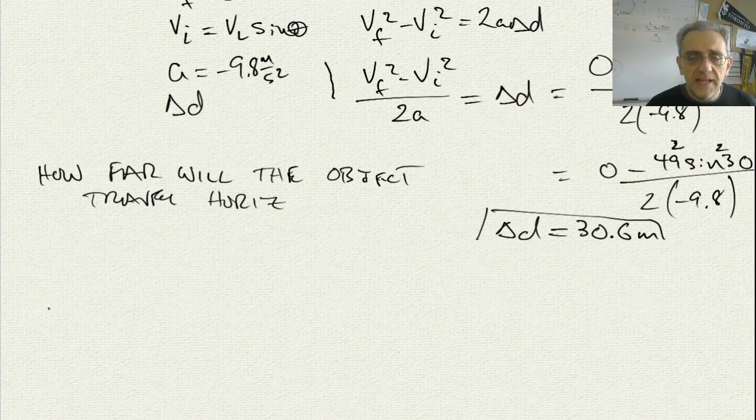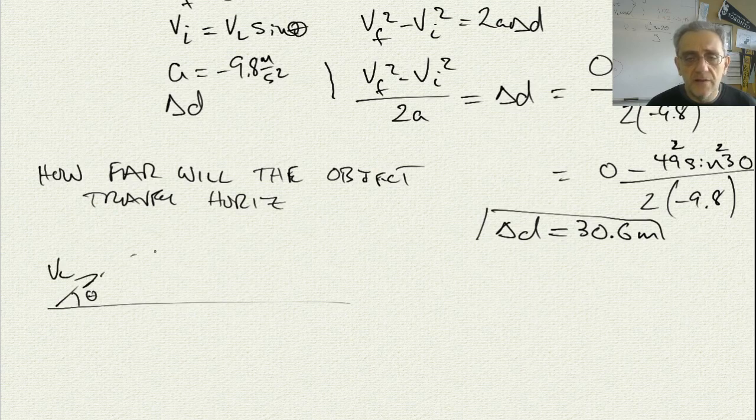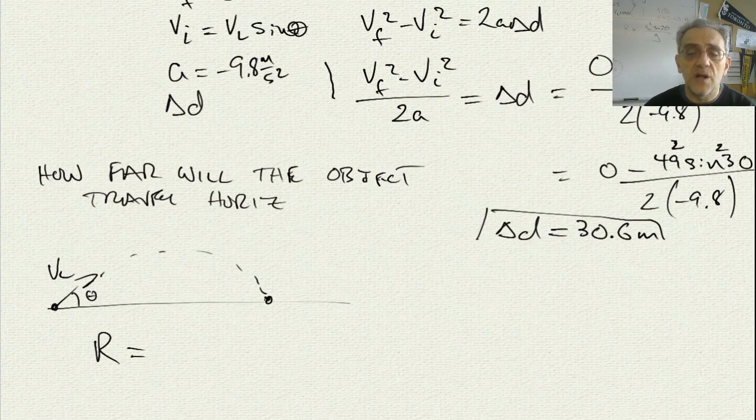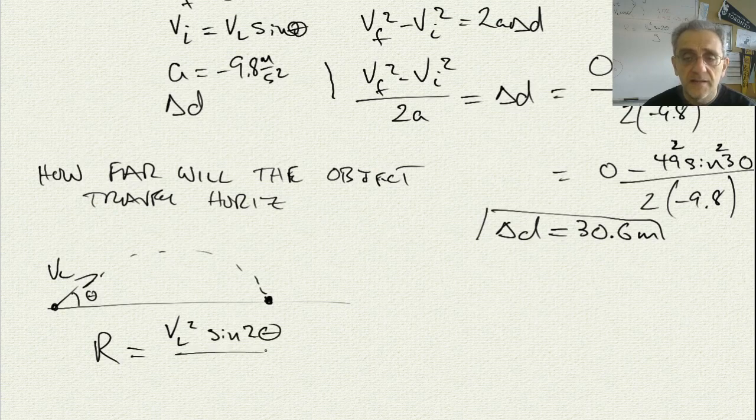So, once again, in this case, we have theta, we have VL, and it comes back to the same height. And we've already solved this problem before in the previous lesson, so we don't need to do it again. We can just use the equation that was given to us, which is the range equation, because the range equation works for when the projectile is launched and comes back to the same height.